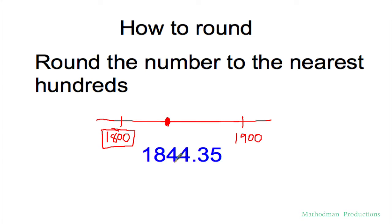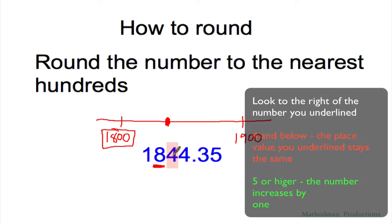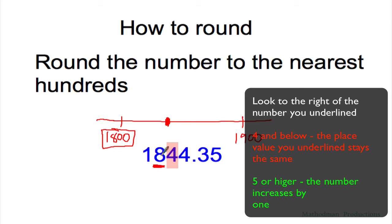If I were to do this problem without a number line, here's how you would do it. First, if the question is asking round to the nearest hundreds, find what the hundred spot is, which is this eight, and underline it. All you have to do is look at the hundred spot, which is this eight, and then look to the very right of it. If this is four and below, everything else behind that eight to the right of that eight will turn into zeros. If it's five or higher, that's going to change this eight to a nine.